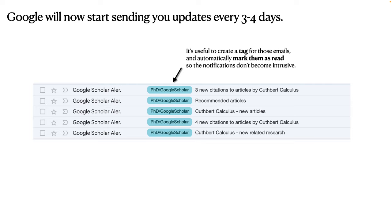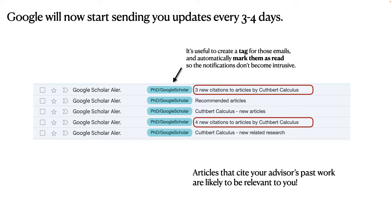And instead, you might, for example, schedule the time once a week to look through the publications that have been emailed to you by Google Scholar. And especially, you should pay attention to the articles that cite your advisor's past work. Because those are likely to be very relevant publications that you might want to read carefully.